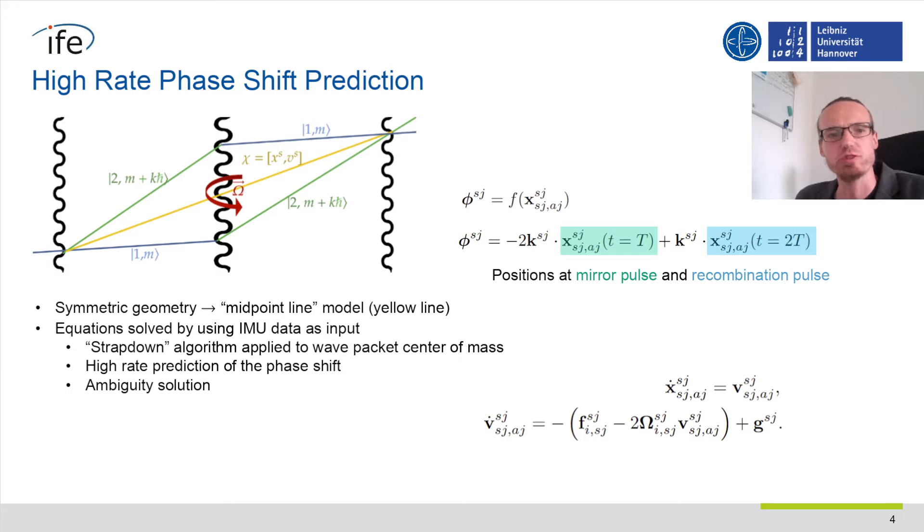The phase shift can be related to the position of the atoms. We propose to use high-rate sensors like conventional IMUs to resolve the dynamics and get a prediction of the phase shift that we expect. This also solves the ambiguity issue.